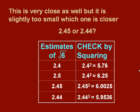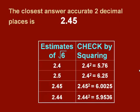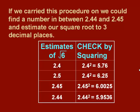So we know our answer's got to be one or the other. Which one is closer to 6? The closest answer accurate to two decimal places would definitely be 2.45. If we carried this procedure on, we could find a number in between 2.44 and 2.45, which would estimate our square root to three decimal places. Give it a try and check your answers with the use of a calculator.